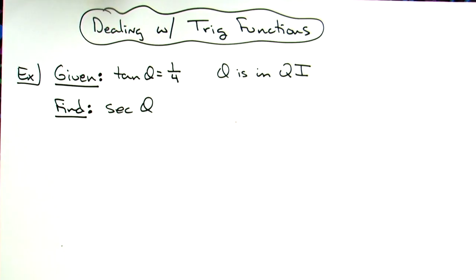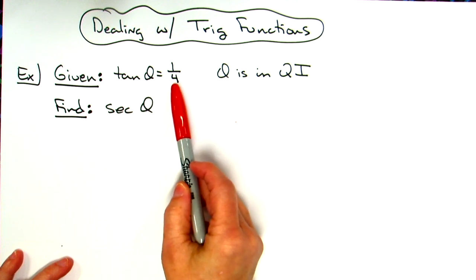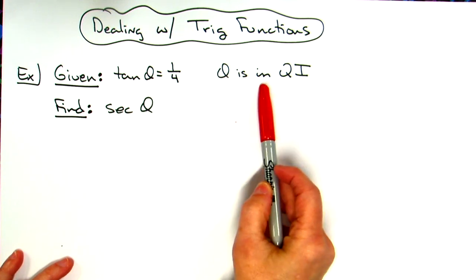In this video we're going to be dealing with some trig functions. We're going to be given some information and then asked to find something else. In this scenario we're given that the tangent of theta is one-fourth and that theta is in the first quadrant.